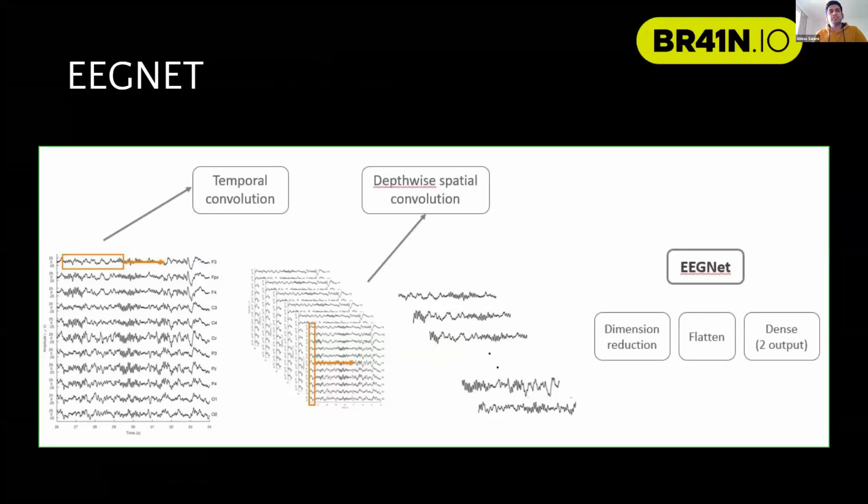As I mentioned, we tried EEGNet. Basically, the idea of EEGNet is based on FBCSP. You have one temporal convolution which extracts the different frequency, decompose the signal to the different frequency bands. We have a spatial filter, et cetera.